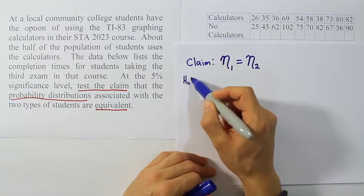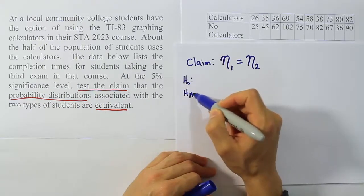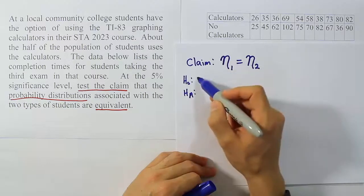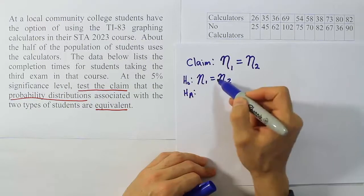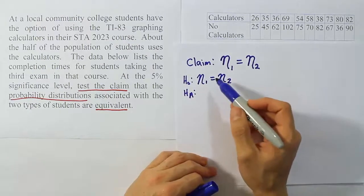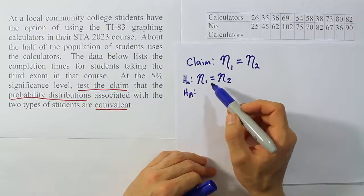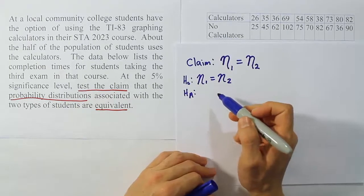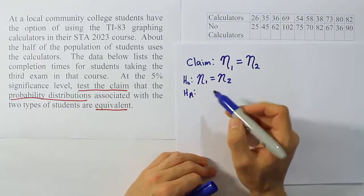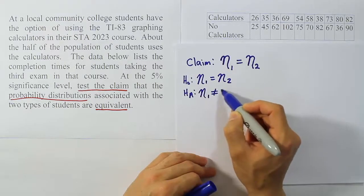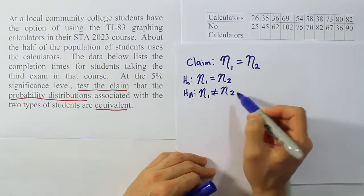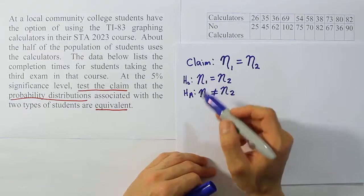Let's get H0 and HA. H0, of course, is the same as the claim in this instance because the two etas are set equal to each other and H0 uses the equality symbol. If it has any kind of an equal sign, then we'll assume that the H0 and the claim are the same. Now HA is going to be not equal to in this case, the opposite of equal to. So you have the claim, you have H0, you have HA.